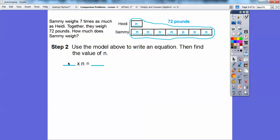So together with Heidi's weight, this is Heidi's weight, and Sammy's weight, those add up to eight, so there's eight n. So eight n is going to equal 72 right there. So there are eight parts, and the parts together equal 72.